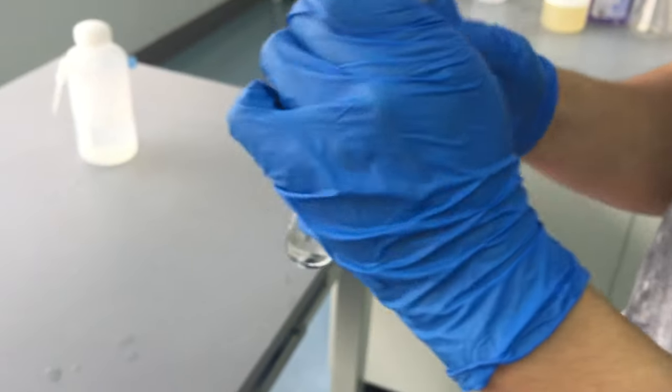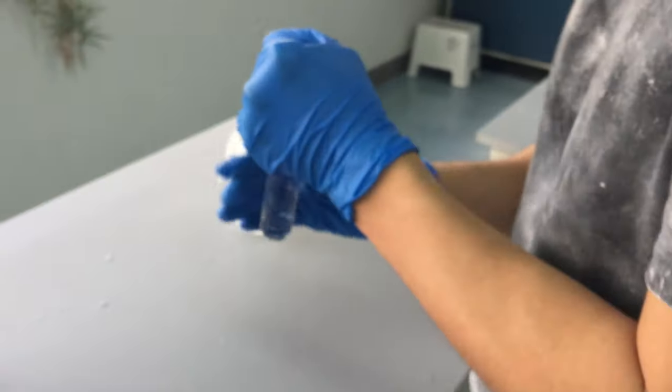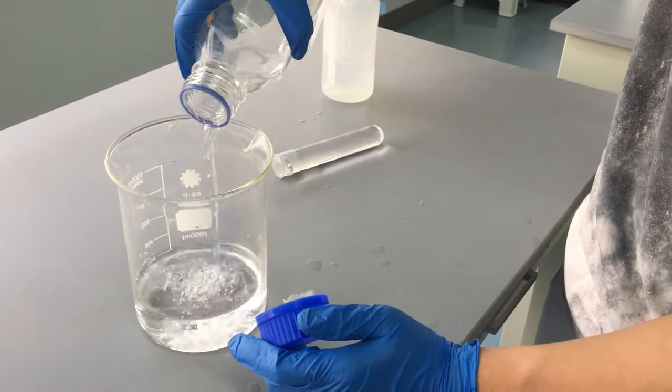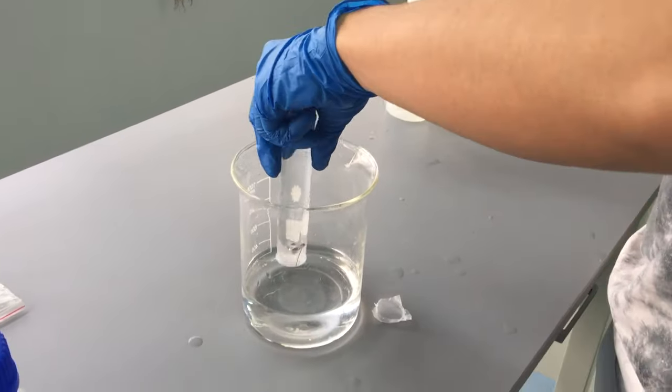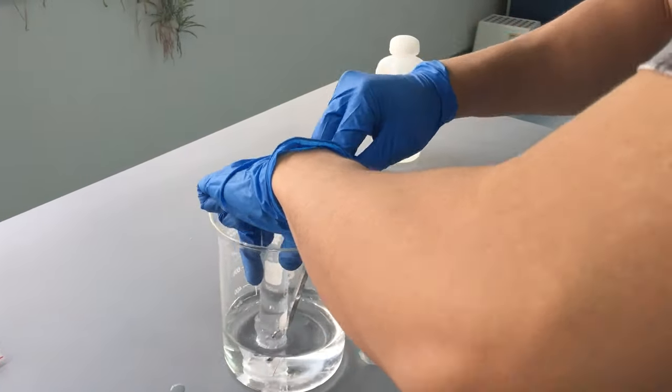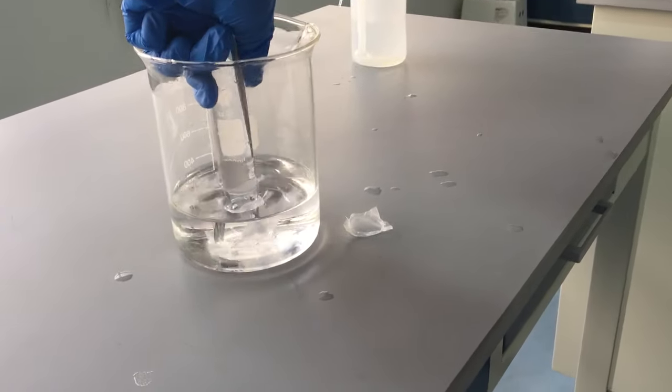Pour hydrochloric acid in the beaker. Invert the test tube into the hydrochloric acid and remove the parafilm so the hydrochloric acid can react with the magnesium.